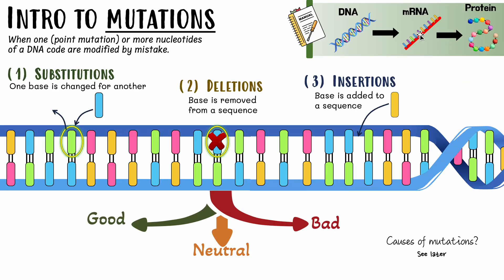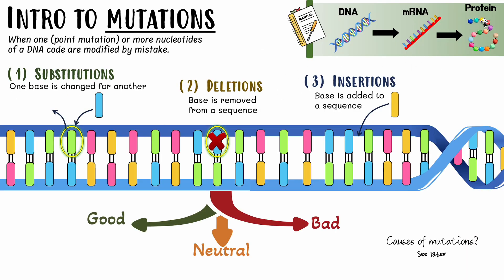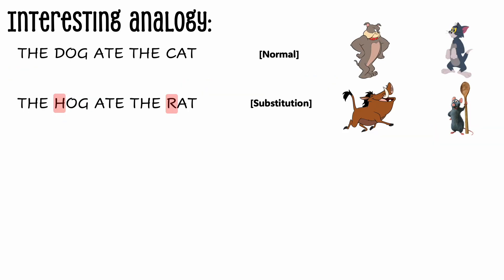So THE HOG ATE THE RAT - we changed those letters so this is a substitution mutation. You can see a mutation can result in the alteration of the meaning of this sentence. This is the same for proteins. If we now change this sequence, we may change some of these amino acids into another amino acid. This could change, just like we changed the meaning of this sentence, it could change now this protein, these individual amino acids, which could alter this protein's function in a good, neutral or bad way, as we'll see later on as we go further in this video.